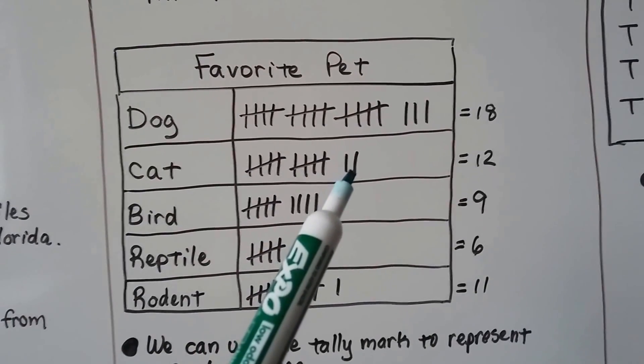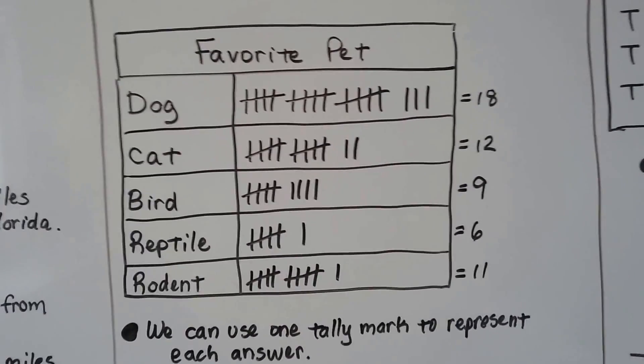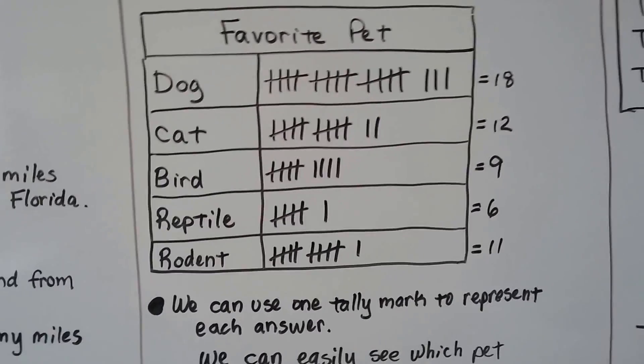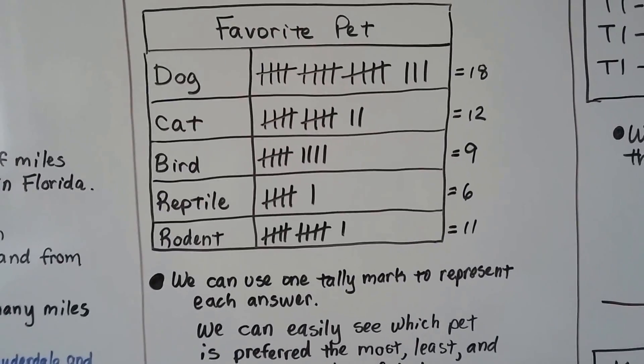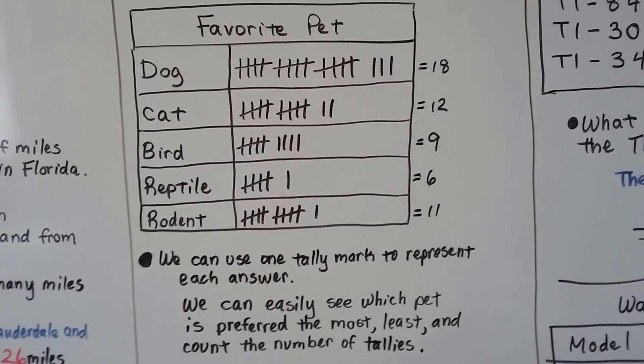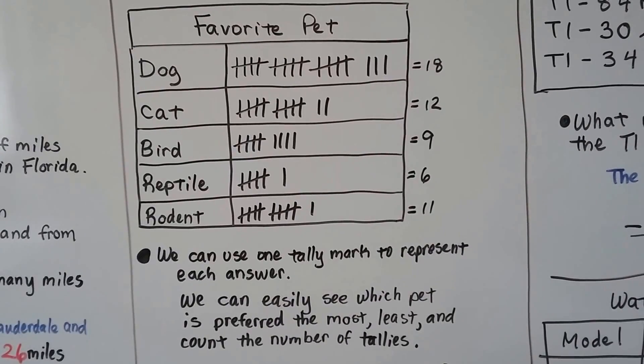5, 10, 11, 12, 12 for cats. We use one tally mark to represent each answer. We can easily see which pet is preferred the most, least, or count the number of the tallies.